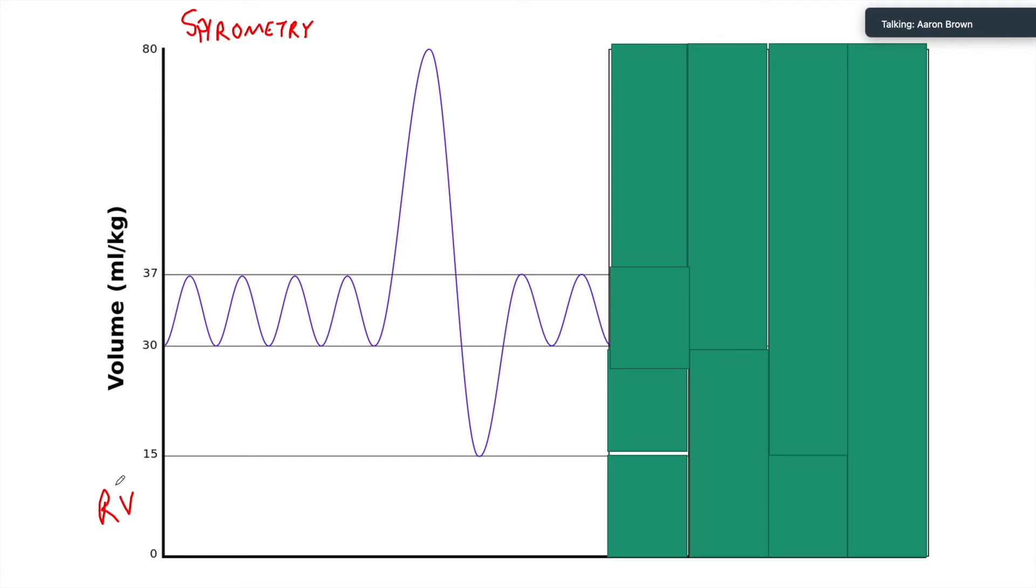We're looking at this spirometry diagram. Whenever we see a diagram, we have to look first at the axes. Here on the bottom we have time on the x-axis. On the y-axis we have volume, and this is mLs per kg. So when we go from zero, nothing in our lungs, to our lungs being completely full, what do we call that volume? Total lung capacity, excellent. And what did we say is sort of an average total lung capacity? Four to six liters, yep.